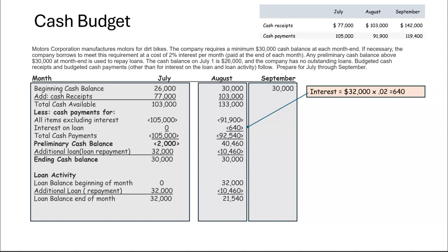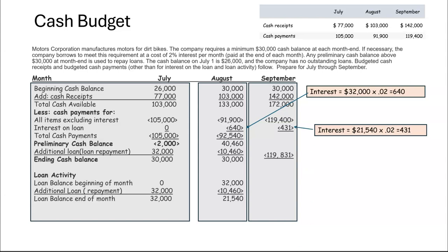In September, we start again with $30,000. We have $142,000 in cash disbursements from the chart above. We still have a balance of $21,540 owed, so we have additional interest. That gives us our total cash payments, and our preliminary balance is $52,069. That means we can pay off the entire remaining loan balance and still have $30,000-plus left. So we leave that in our cash account because we don't owe any money anymore.